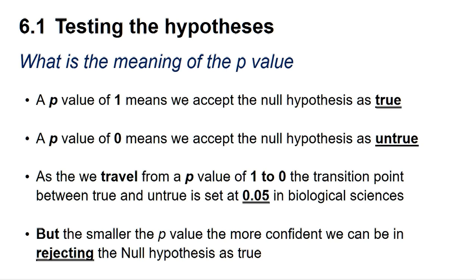So what is the meaning of the p-value? A p-value of 1 means we can accept the null hypothesis as true, whereas a p-value of 0 means we can accept the null hypothesis as untrue. As we travel from a p-value of 1 to 0, the transition point between true and untrue is set at 0.05 in the biological sciences. The smaller the p-value below 0.05, the more confident we can be in rejecting the null hypothesis.